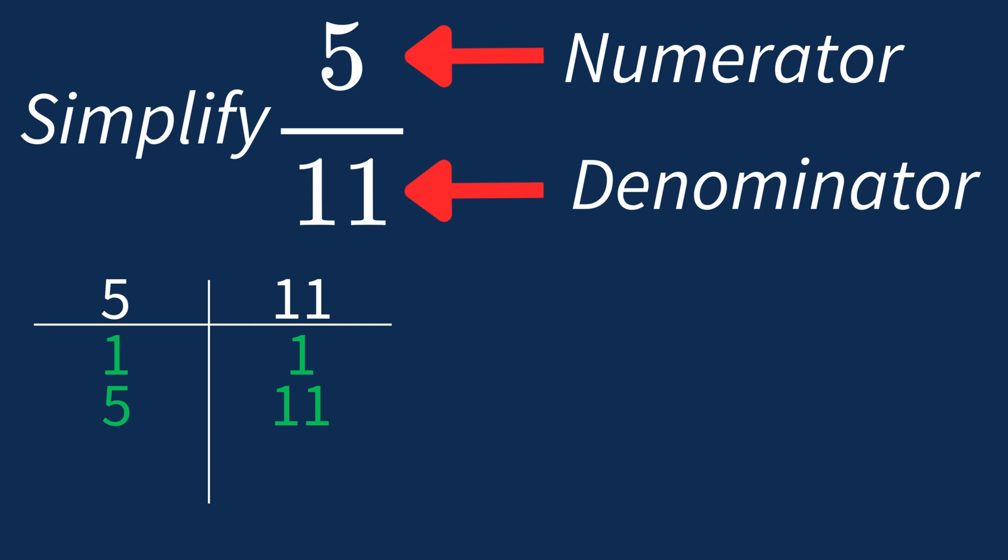So in this case, the largest common factor is 1. This means we'll divide both the numerator and denominator by 1 to see if anything changes. Dividing the numerator, 5 by 1, leaves us with 5. Dividing the denominator, 11 by 1, leaves us with 11.